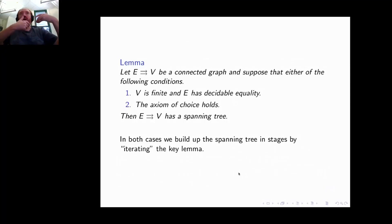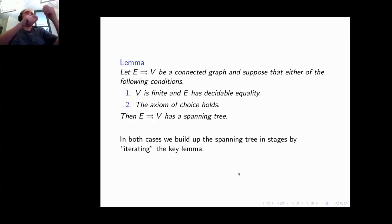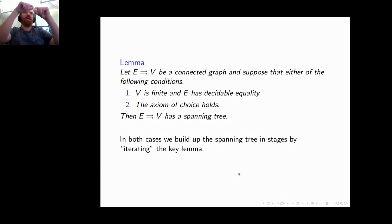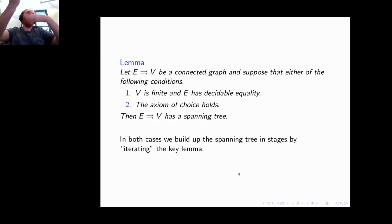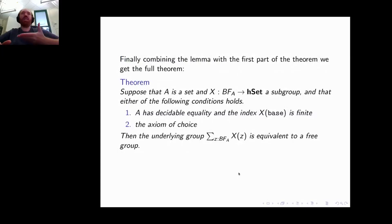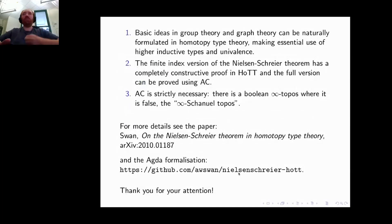The spanning tree is constructed by iterating this lemma, building up one edge at a time. At each stage we have a tree constructed so far, and we find an edge with one endpoint on the current tree and one endpoint outside it, then add that edge. We repeat this either finitely many times or transfinitely, depending on our assumptions. Then we combine this with the earlier flattening step to get the Nielsen-Schreier theorem.